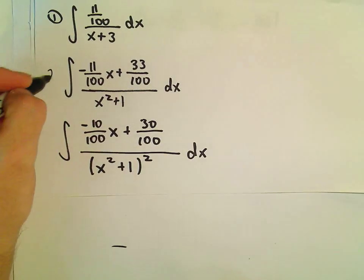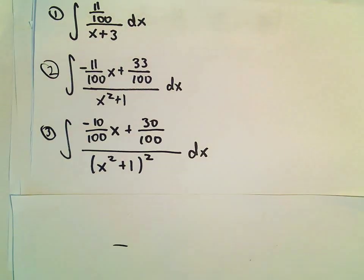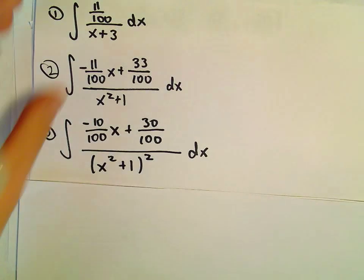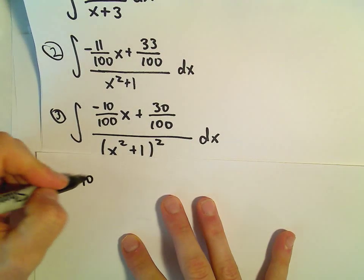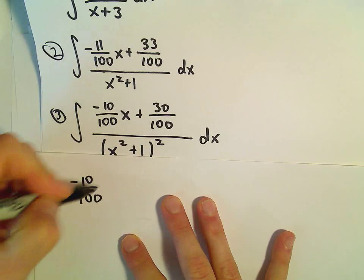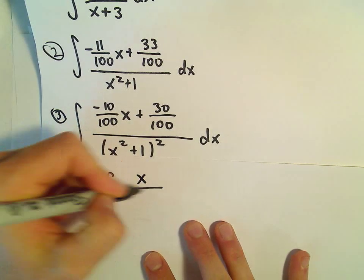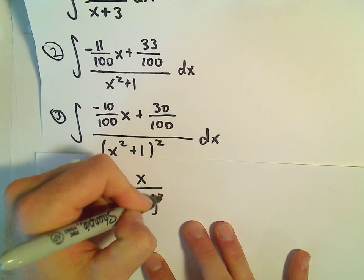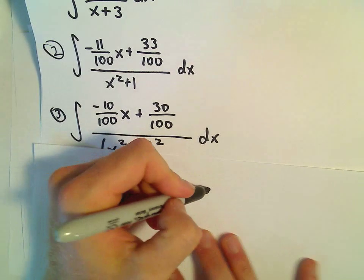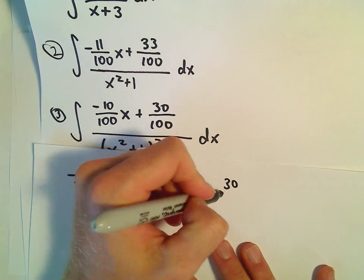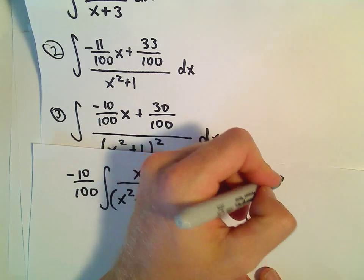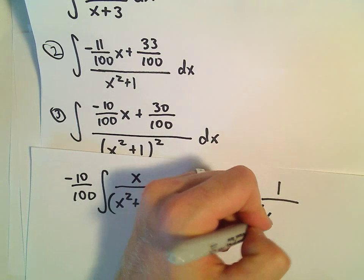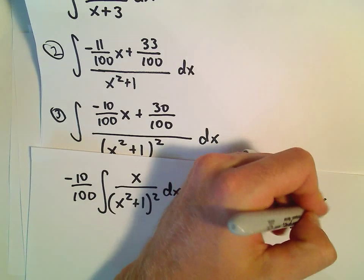Then we're left with the third one, which is going to be a little more involved and will involve a new idea. I'll break this up the same way: pull out negative 10 over 100 times x over x squared plus 1 squared dx, plus 30 over 100 — or 3 tenths — times the integral of 1 over x squared plus 1 squared dx.